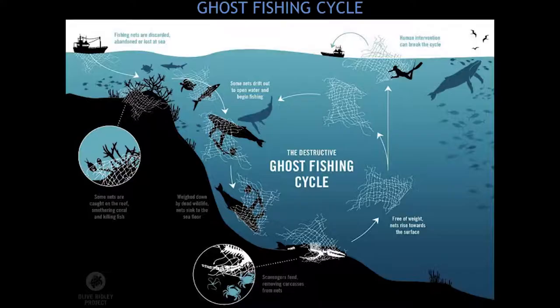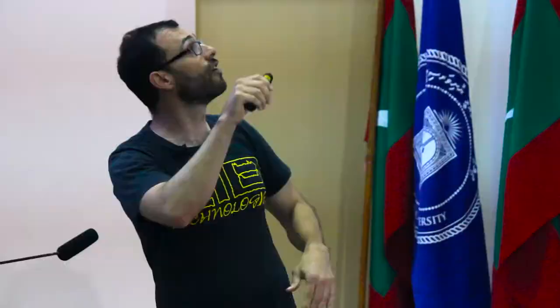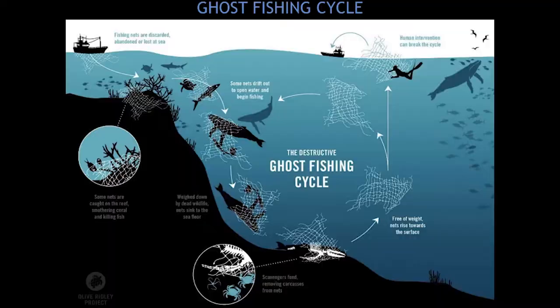Ghost gear in the open ocean has a cyclic lifespan. A fishing boat loses a net — if it is lost on a coral reef, it snags on the coral, smothers corals, and interferes with reef fish. Over time, a lot of fishing gear floats because plastic is less dense than seawater. As it floats, it continues to ghost fish — catching sharks, whales, turtles, and fish.